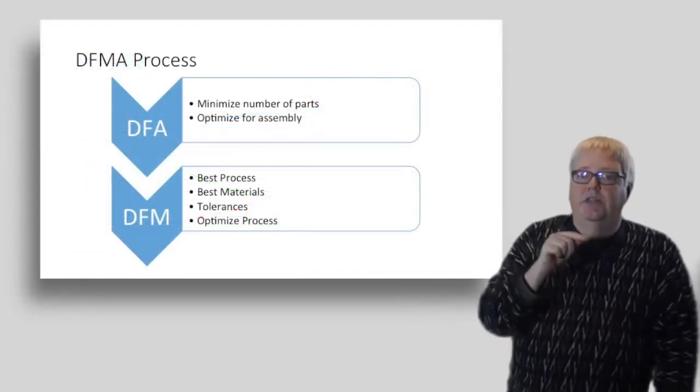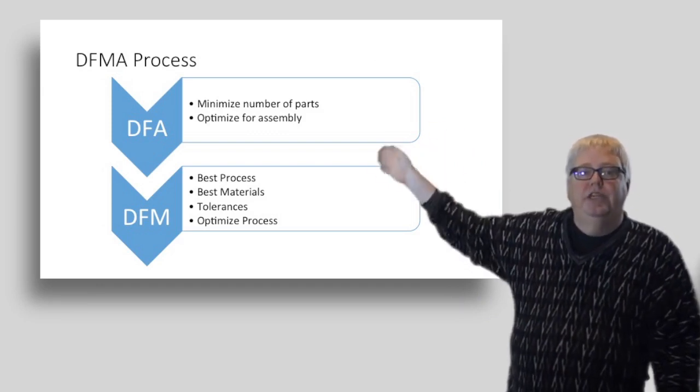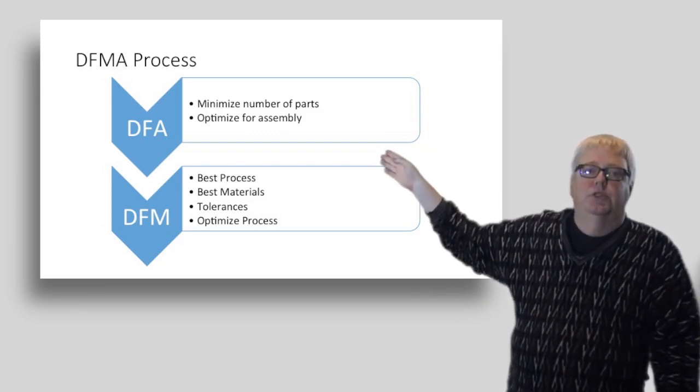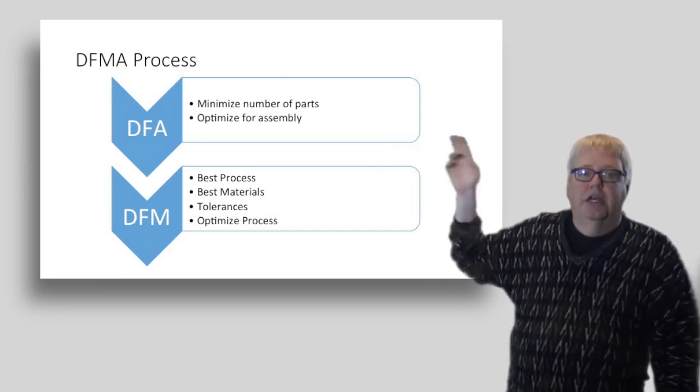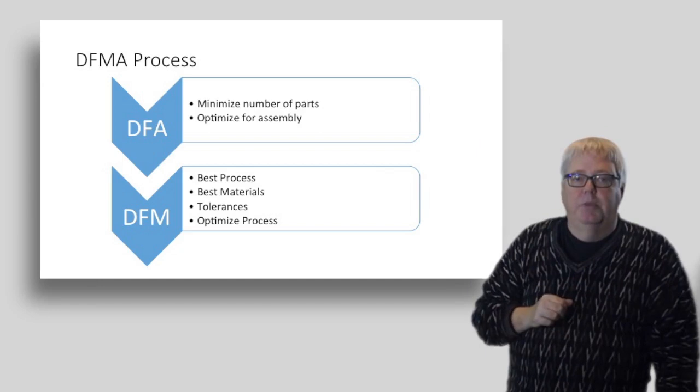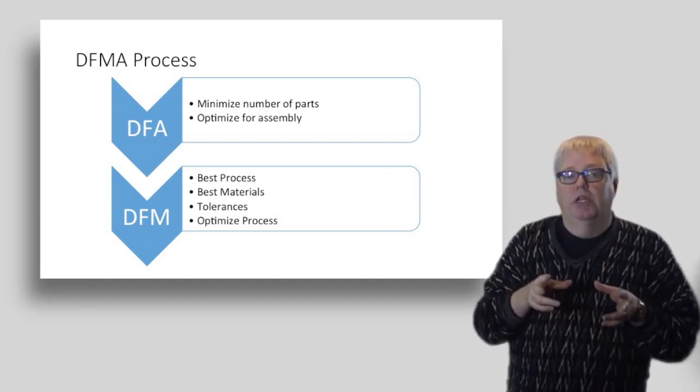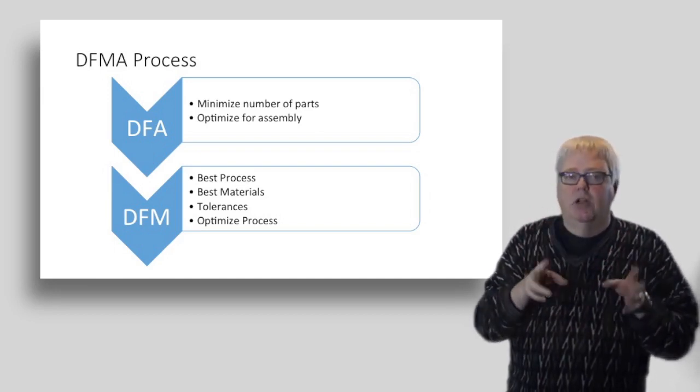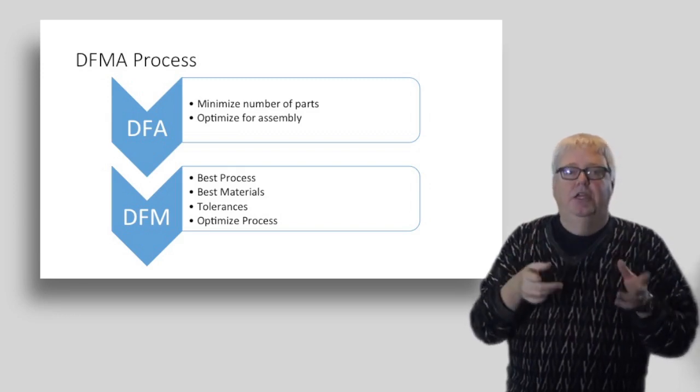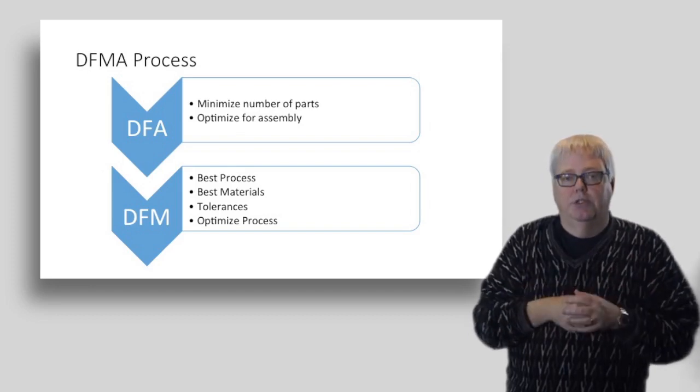Here's how the DFMA process works. First, you start with DFA. Focus on the assembly side and especially on minimizing the number of parts in the product and optimizing them for assembly. Once you've got that covered, it's time to focus on the manufacturability of the individual parts. You're going to want to consider process, materials, tolerances and anything you can do to optimize the part for your chosen manufacturing process. Let's dig in and see how it works.